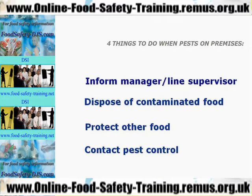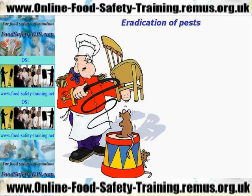There are four things you must do as a food handler if you identify the signs of pests on premises. The first and most important thing is to inform your manager or line supervisor, dispose of contaminated food, protect other food that hasn't been contaminated, and contact pest control.